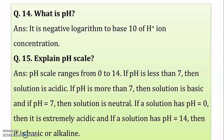Explain the pH scale. The range of the pH scale is 0 to 14. If pH is less than 7, the solution is acidic. If pH is more than 7, the solution is basic or alkaline. If pH equals 7, the solution is neutral. If pH equals 0, the solution is extremely acidic. If pH equals 14, the solution is extremely basic or alkaline.